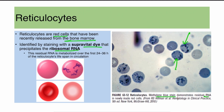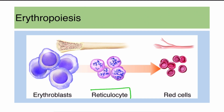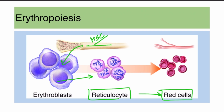As you can see, this blue staining represents the residual RNA. After 24 to 36 hours, this RNA is metabolized and the cells convert into normal red blood cells. These reticulocytes are the precursors of red cells, produced from the bone marrow. The hematopoietic stem cell differentiates into the erythroblast, which through various stages leads to reticulocyte formation. These reticulocytes enter circulation and after one day become mature red cells.